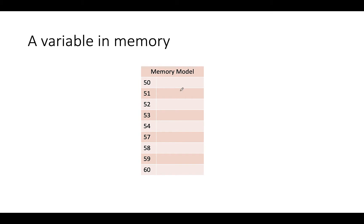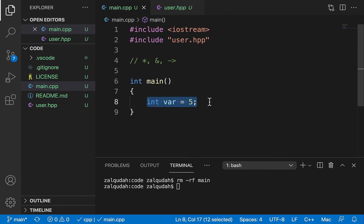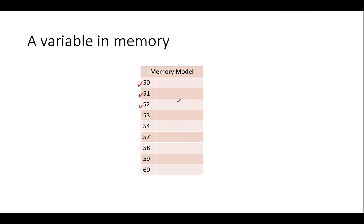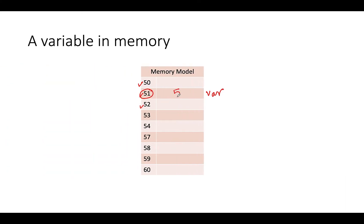This is how we tend to think of memory. Memory is a long array of locations. Each one of these locations is identified by an address and is capable of storing values. So when I make a declaration like integer var equals 5, a location in memory is reserved, named var — I've chosen that this is going to be at address 51 — and a value 5 is stored there because of the initialization.